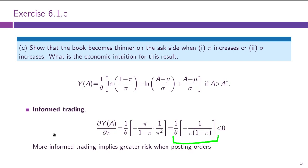The intuition is the same as in many prior models: the more informed trading there is, the costlier it is for limit traders to trade. So limit traders are less eager to submit their orders, meaning liquidity and depth in the market dry out.